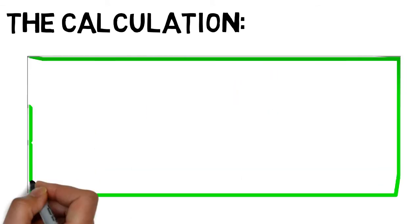1/λ = (1.09678 × 10⁻² nm⁻¹) × (1/2² − 1/4²). 1/λ = 2.0564625 × 10⁻³ nm⁻¹. Therefore, λ = 486.3 nanometers.